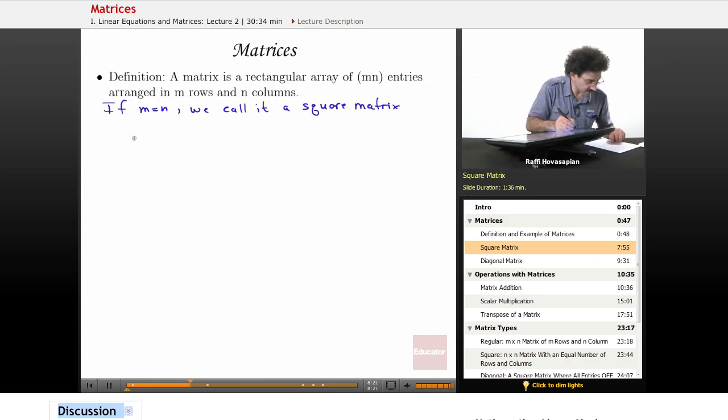If m equals n, if the number of rows equals the number of columns, we call it a square matrix. So something like A equals [3, 4, 7, 10; 11, 14, 8, 1; 0, 5, 6, 7; 7, 6, 5, 0]. So this is four this way, four this way. This is a four by four matrix. It is a square matrix.